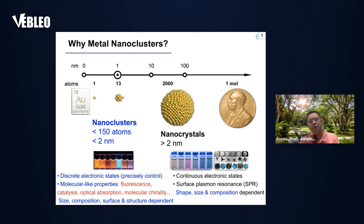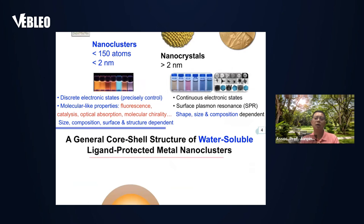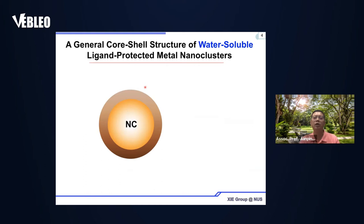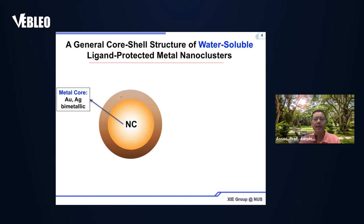For solution-based applications, you need to know that this cluster has a very active surface. If you do not protect the surface of this cluster, it cannot be used for solution-based applications. We need to passivate the surface of our cluster and dissolve it in water. The material I will discuss today is the ligand-protected meta-nanocluster. For ligand-protected meta-nanoclusters, it generally has a core-shell structure. The core is a metal like gold or silver, or it can be an alloy like gold and silver.